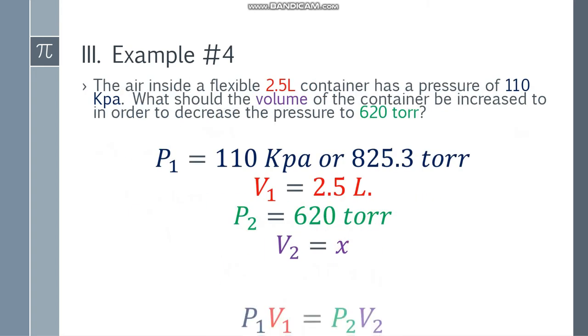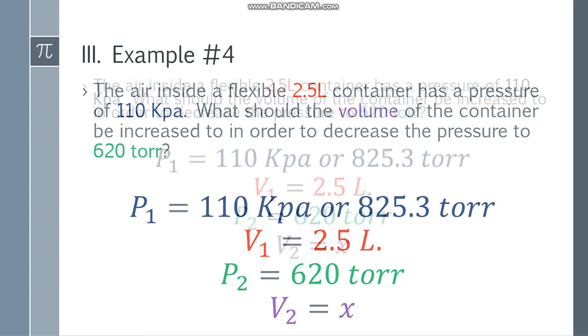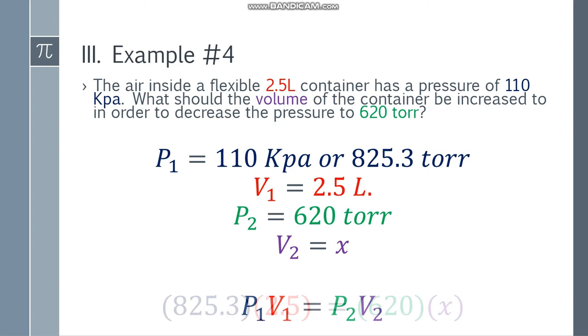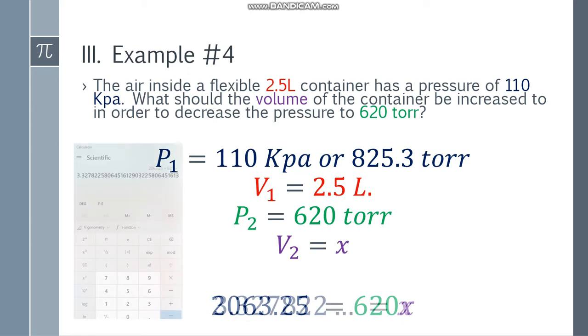Since we're complete, let's have the formula: P1V1 is equal to P2V2. Substitute the values: 825.3 times 2.5 equals 620 times X. Simplify the left side: 825.3 times 2.5 equals 2,063.25. Equal to 620X. Divide both sides by 620, and X will be 3.327822 and so on.